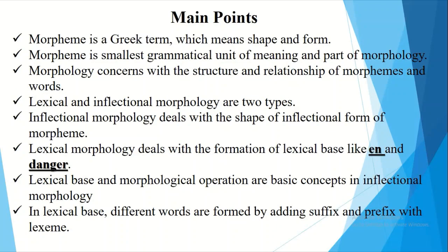To summarize the important points of this lecture: morpheme is a Greek term meaning shape and form; it is the smallest grammatical unit of meaning and is part of morphology. Morphology concerns the structure and relationship of morphemes and words. The two types are lexical and inflectional morphology. Inflectional morphology deals with the shape of inflectional forms, while lexical morphology deals with the formation of lexical bases. Lexical base and morphological operation are basic concepts in inflectional morphology, where different words are formed by adding suffixes and prefixes to the lexeme.